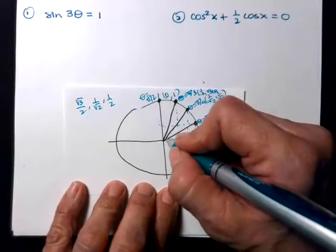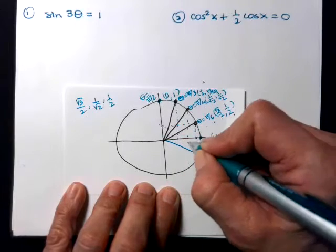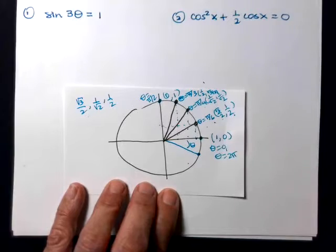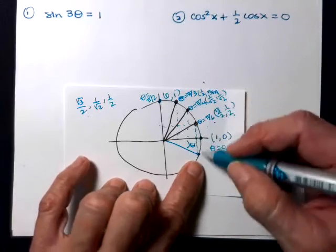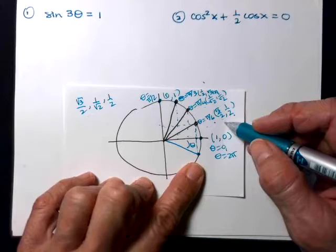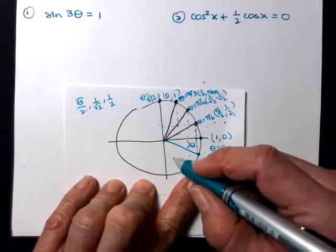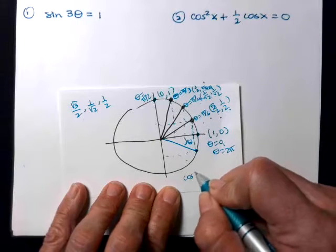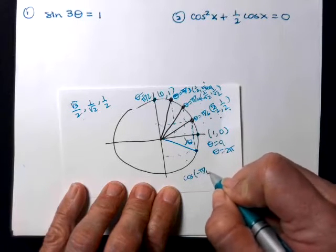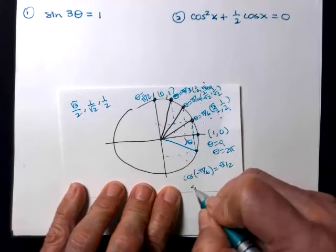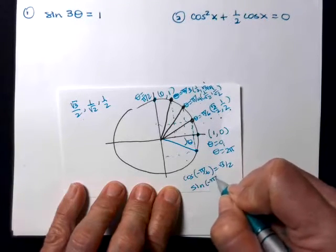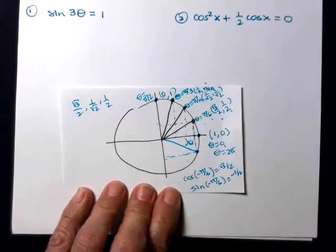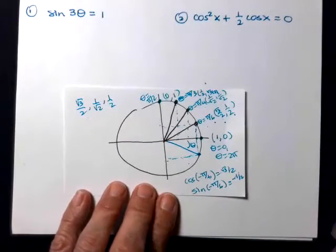If I were over here in quadrant 4, let's say theta was negative pi sixths — it's going to have the same x value as positive pi sixths, but the y value will be the opposite. So cosine of negative pi sixths is root 3 over 2, but sine of negative pi sixths is negative 1 half, because the y value would be negative there. This is how I'm going to use my unit circle.